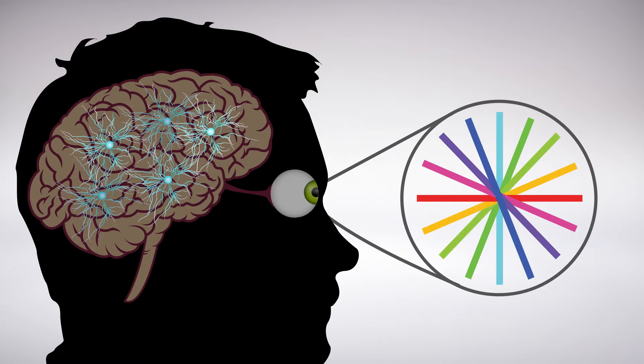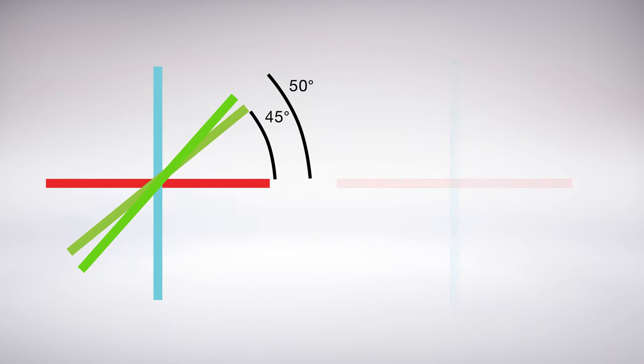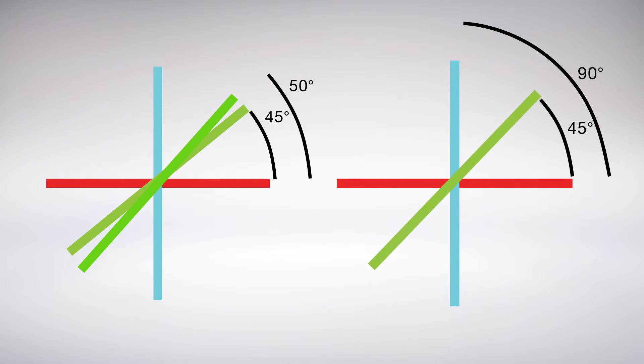But the extent to which neurons care about orientation, or their degree of selectivity, varies. Some are extremely choosy, distinguishing, say, between 45 and 50 degrees. Others are more lax, responding only to large differences, like between 45 and 90 degrees.